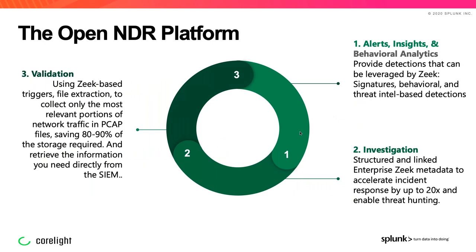The OpenNDR platform from Corelight comprises three key components. The first is alerts, insights, and behavioral analytics — Corelight provides not only signature-based but also non-signature-based alerts, plus packages that detect behavior within the environment. Once you get an alert, the next step is investigation, and this is where you quickly pivot to Zeek-based metadata. Zeek, formerly known as Bro, has been around for over 25 years and was created by the founders of Corelight.